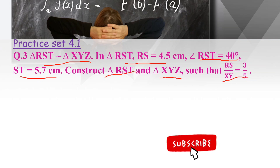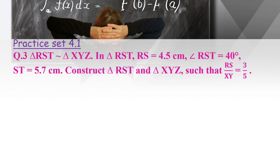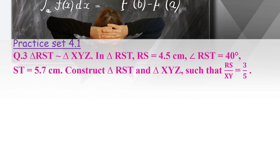Such that RS upon XY equals 3 upon 5. We have sufficient information for triangle RST, but we don't have sufficient information for triangle XYZ. To construct this triangle, we need to find sufficient information using the property of similar triangles — that if two triangles are similar, the ratio of their corresponding sides will be equal and their corresponding angles will be congruent.